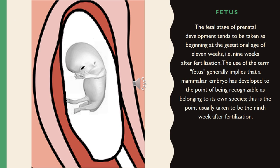The fetal stage of prenatal development tends to be taken as beginning at the gestational age of 11 weeks, that is 9 weeks after fertilization. The use of the term fetus generally implies that a mammalian embryo has developed to the point of being recognizable as belonging to its own species, which is usually taken to be the 9th week after fertilization.